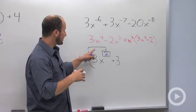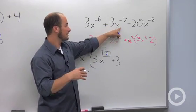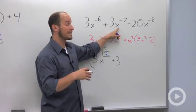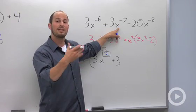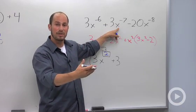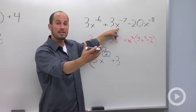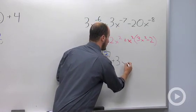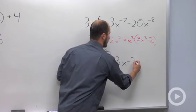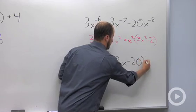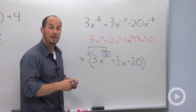And again, negative 8 times what is going to give us x to the negative 7? Again, when we multiply bases, we add exponents. Negative 8 plus 1 is negative 7. So this is just going to be x, and then end up with minus 20.